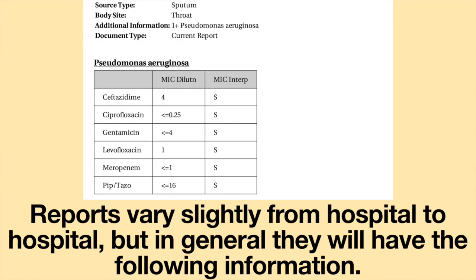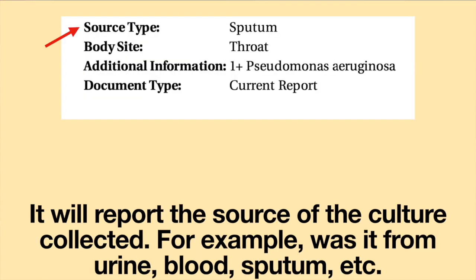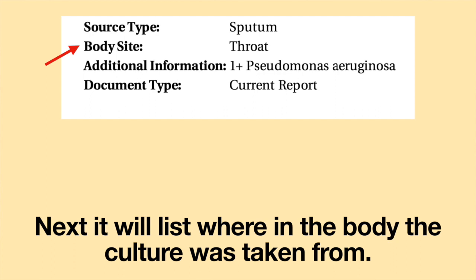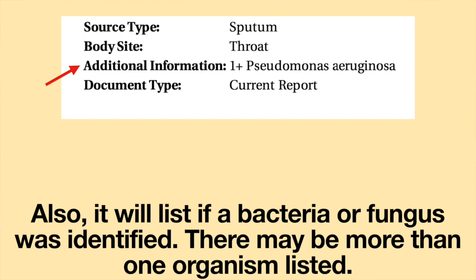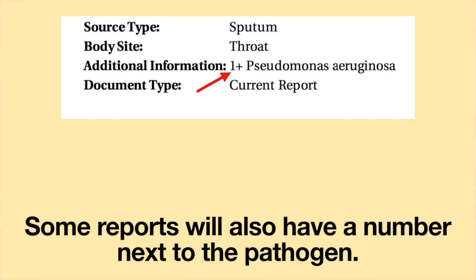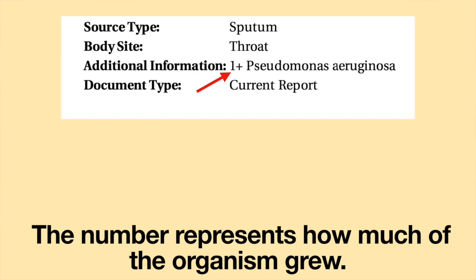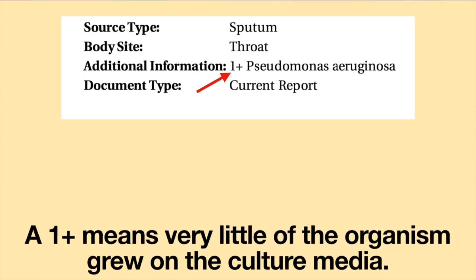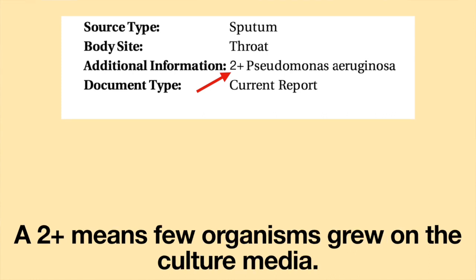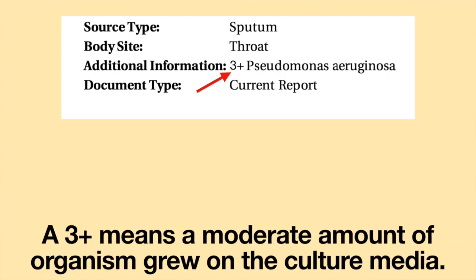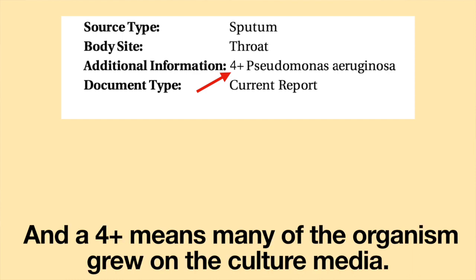Reports vary slightly from hospital to hospital, but in general they will have the following information: the source of the culture collected — for example, was it from urine, blood, sputum, etc. — and where in the body the culture was taken from. It will also list if a bacteria or fungus was identified; there may be more than one organism listed. Some reports will also have a number next to the pathogen — for example, 1 plus Pseudomonas aeruginosa. The number represents how much of the organism grew: 1 plus means very little, 2 plus means few, 3 plus means a moderate amount, and 4 plus means many organisms grew on the culture media.